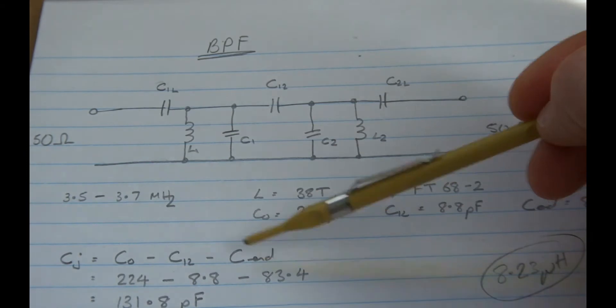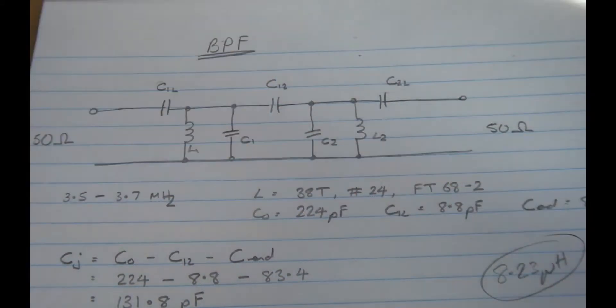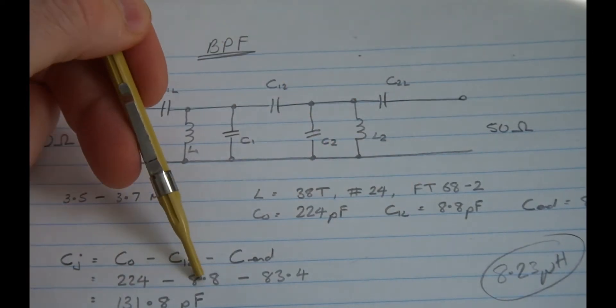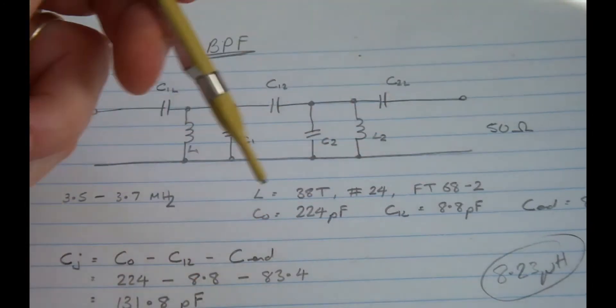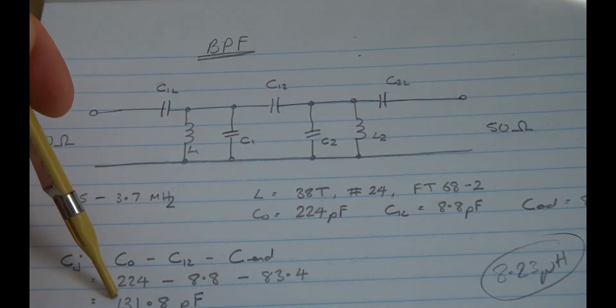And then they give you this formula here to work out C1 and C2. So if we substitute in 224 minus C12, which is 8.8, minus the end capacitance, 83.4, gives you a value for each of those capacitors of 131.8.